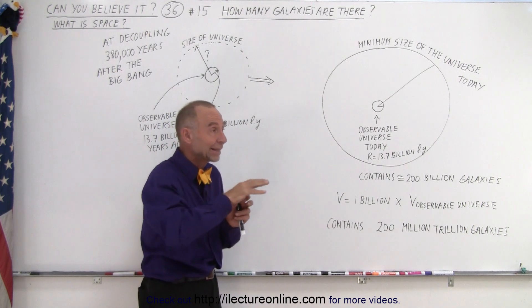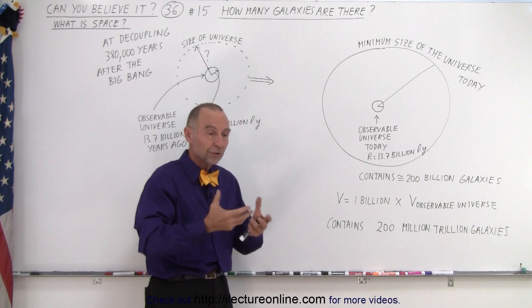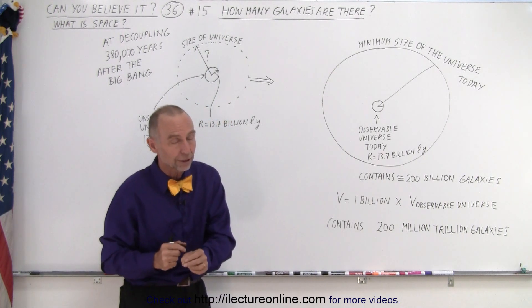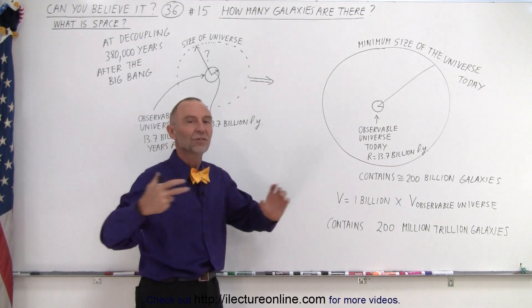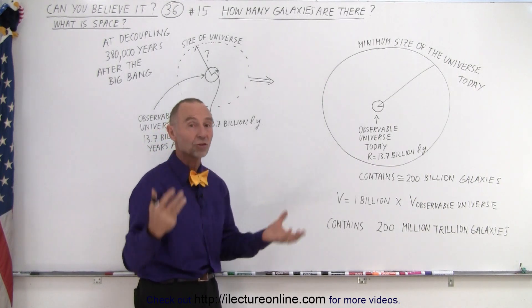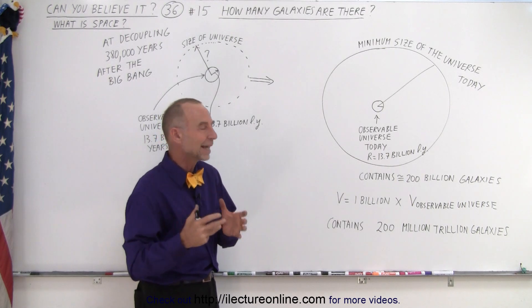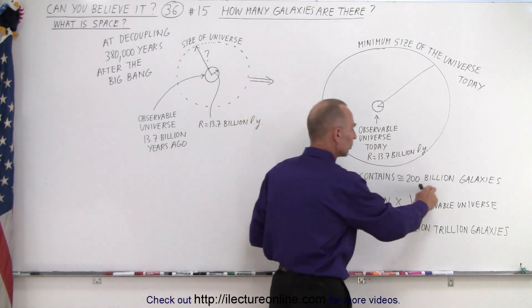We realized that back then, when the universe first began to form galaxies, the number may have been as many as 2 trillion, but since then many galaxies have collided and combined into larger galaxies. So now we're down to probably about 200 billion galaxies in our observable universe.